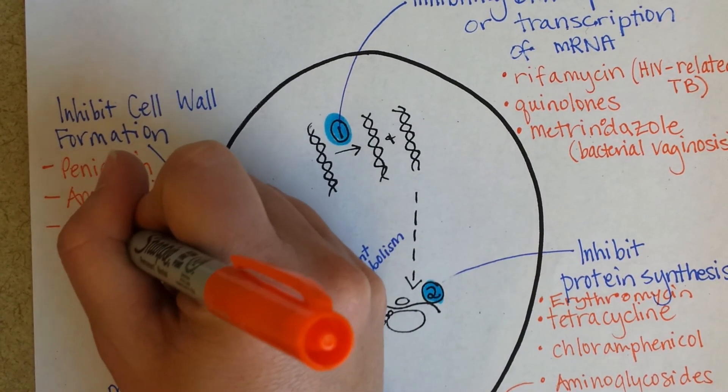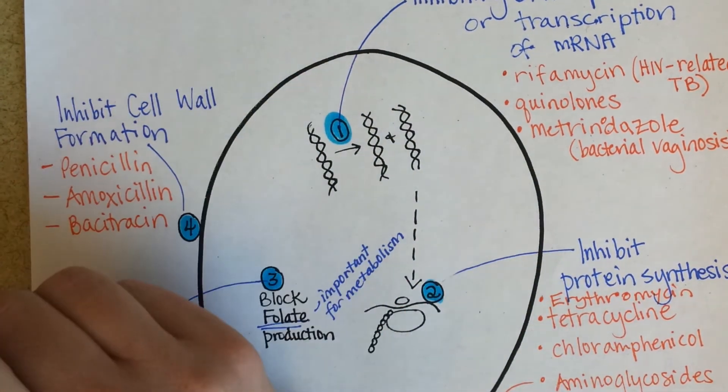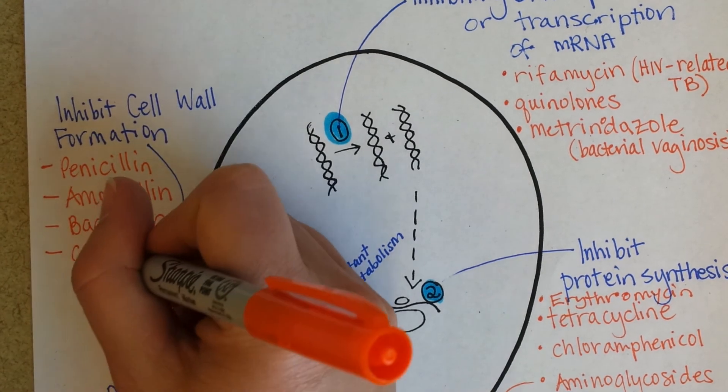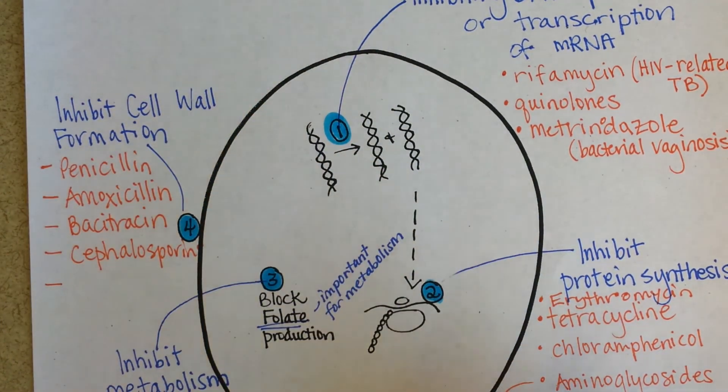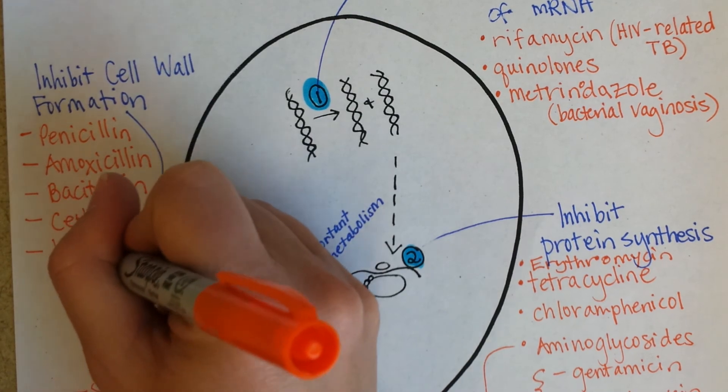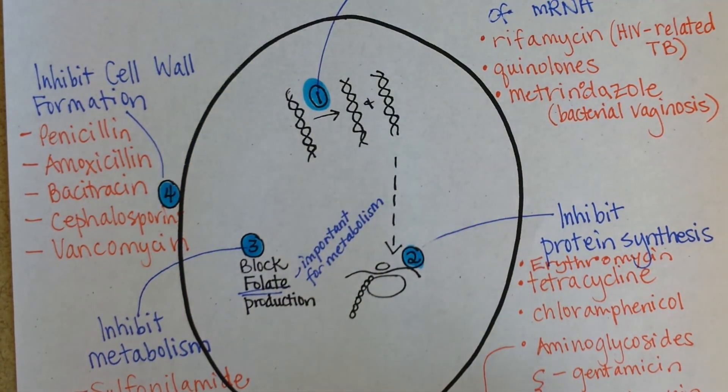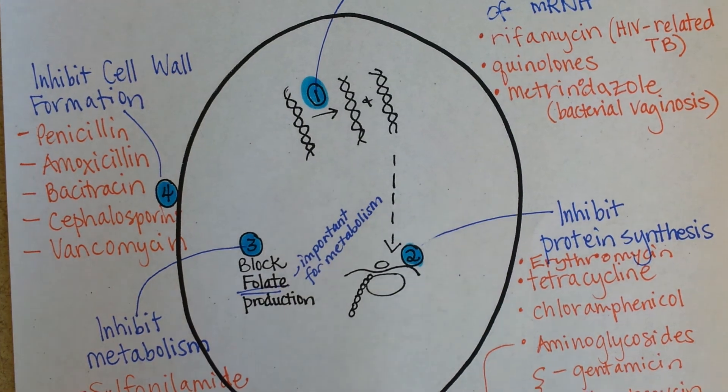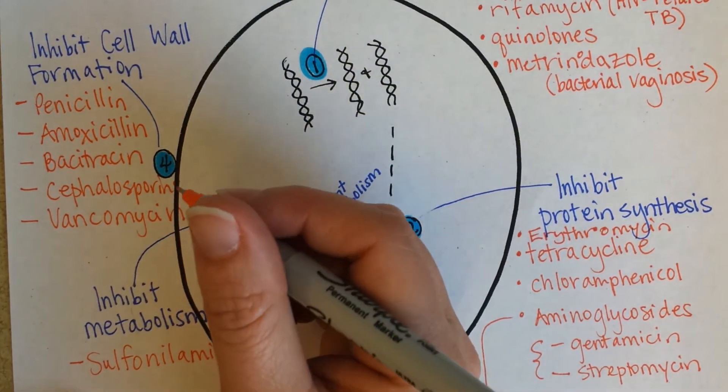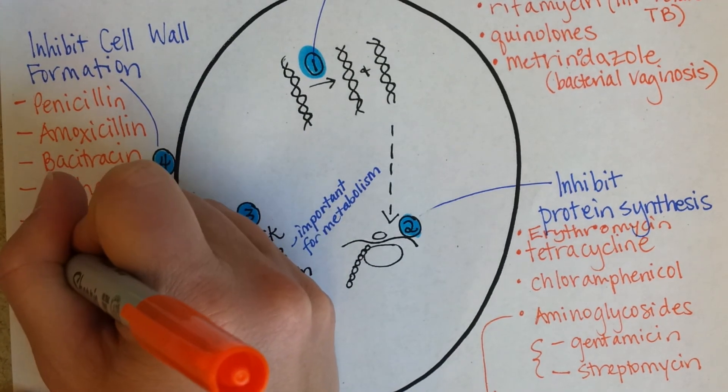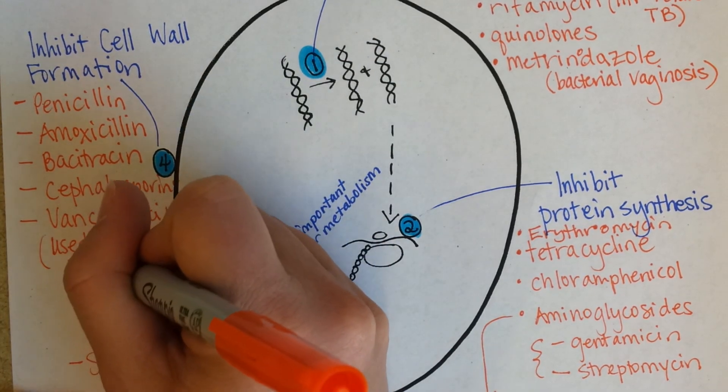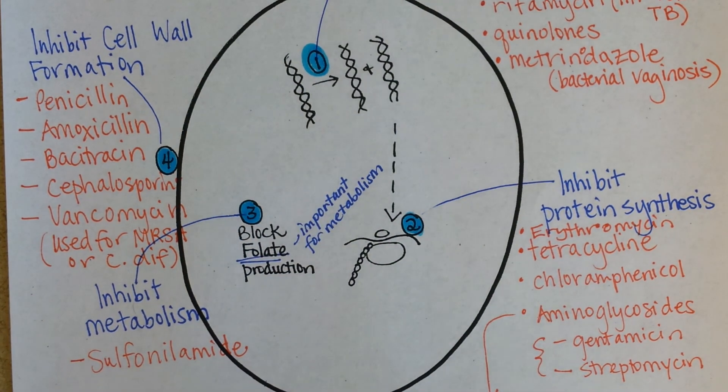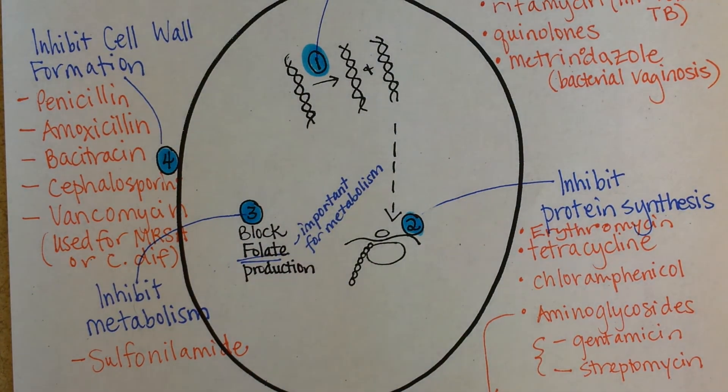And then bacitracin or bacitracin. Some of these you may have heard of: cephalosporins, and the almost notorious at this point, vancomycin. This is the antibiotic that's used if someone has MRSA and so they're not responding to regular antibiotics, and also for some types of C. diff infections or some things.